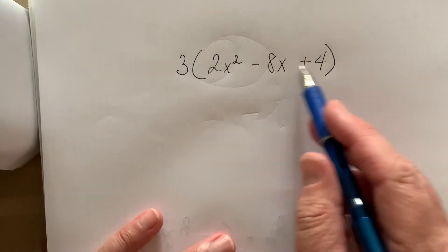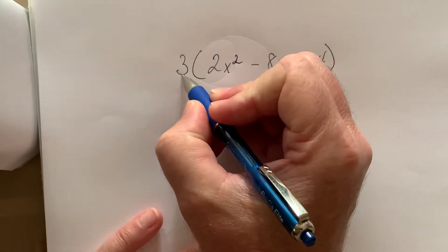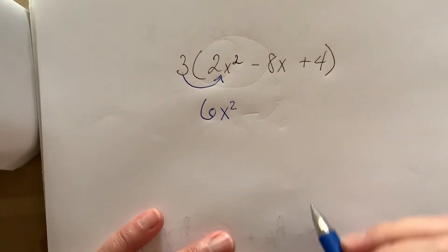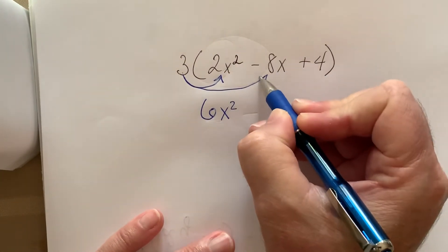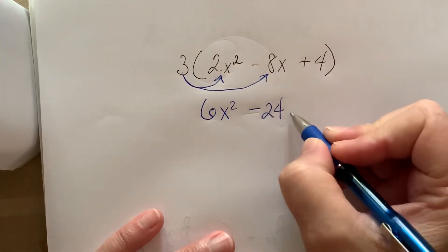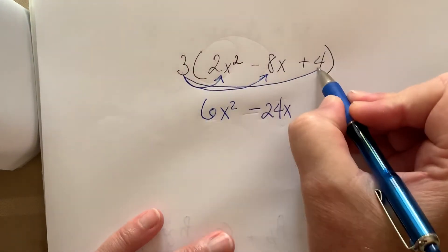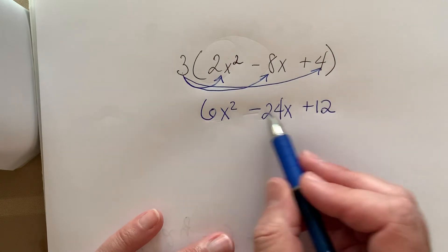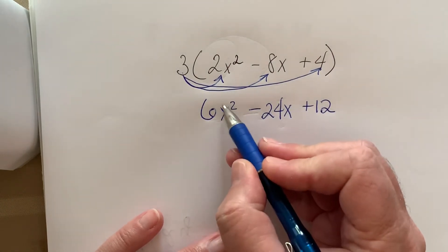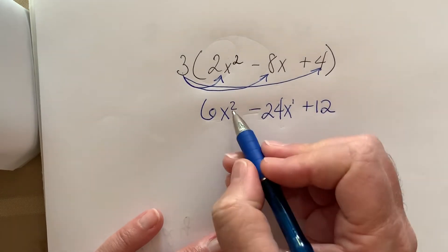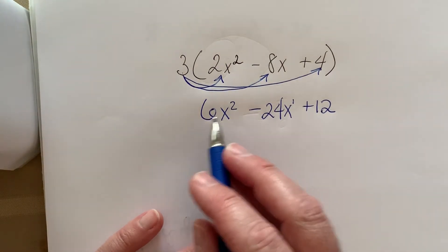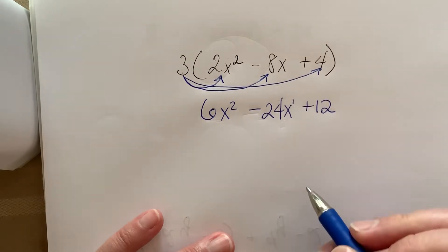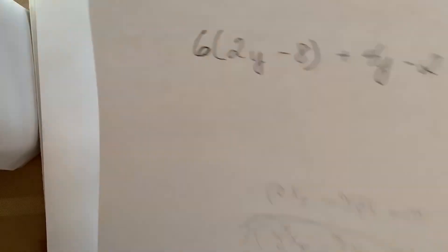Now we have three terms inside the parentheses: 3(2x² - 8x + 4). Take the 3 times the first term: 3 times 2 is 6, giving 6x². Then 3 times -8 is -24, giving -24x. Then 3 times 4 is +12. At this point you're done — you cannot combine these because they are unlike terms: x² has an exponent of 2 and x has an exponent of 1. This result, 6x² - 24x + 12, is also in standard form: highest exponent first, then the next, then the constant.